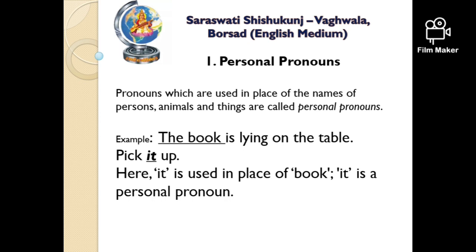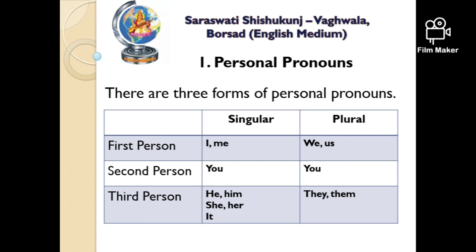Another example we have already seen: Rita is a good girl. So 'she' also becomes a personal pronoun. So personal pronouns are used in place of nouns — persons, animals and things. Let us try to understand personal pronouns in the form of a chart. There are three forms of personal pronouns: first person, second person and third person.